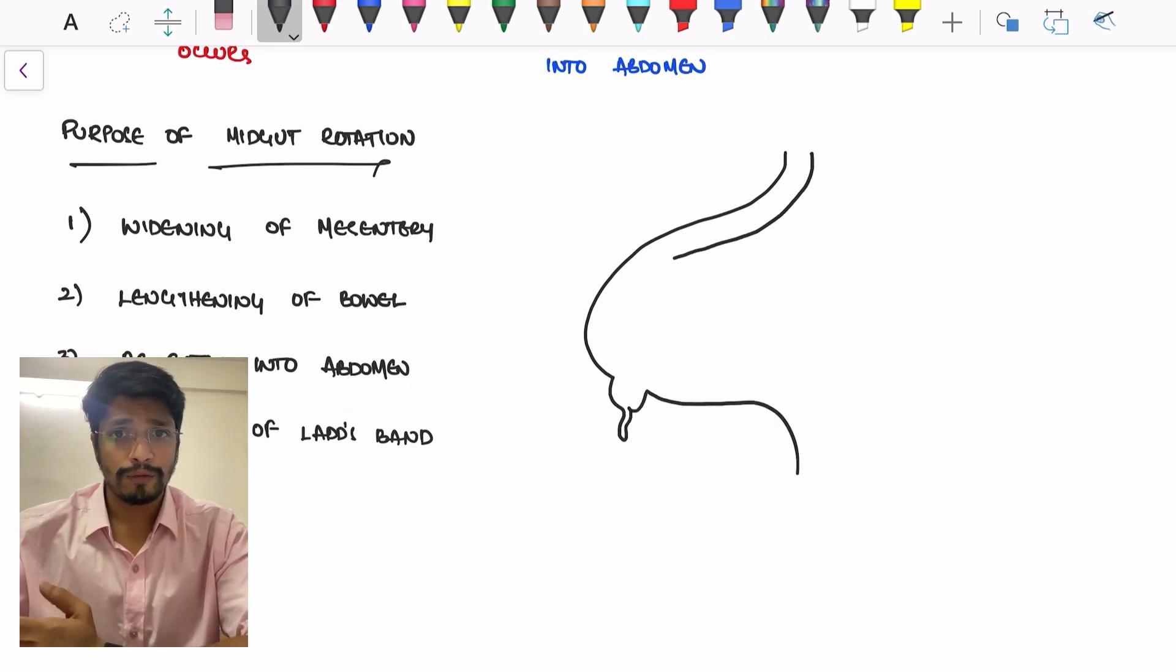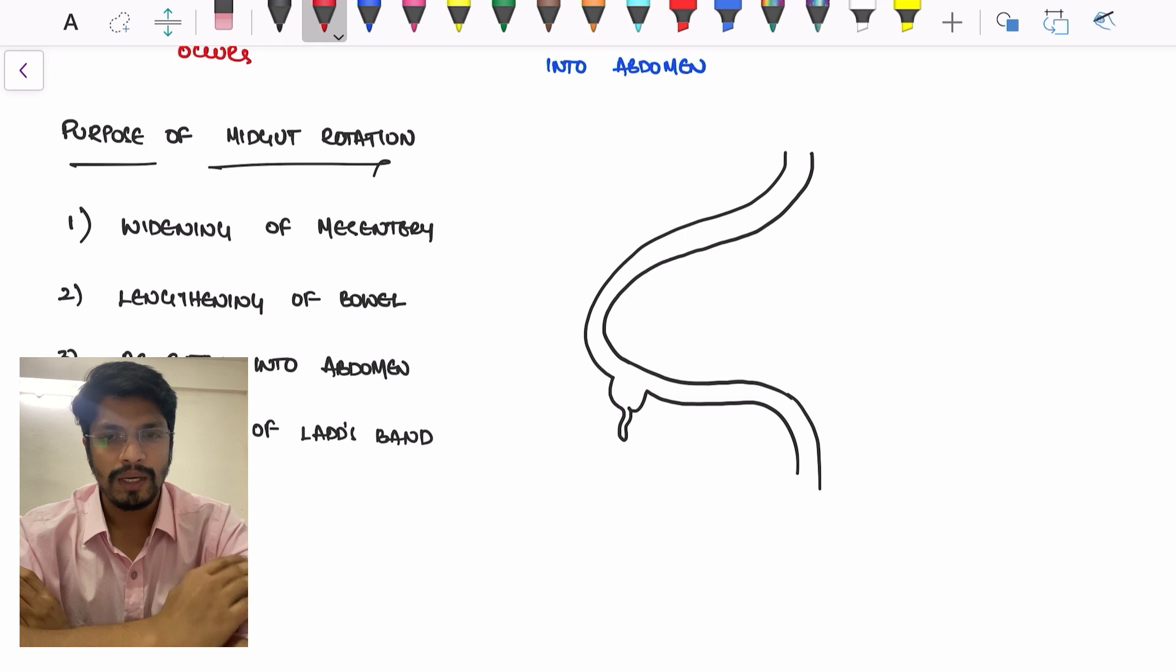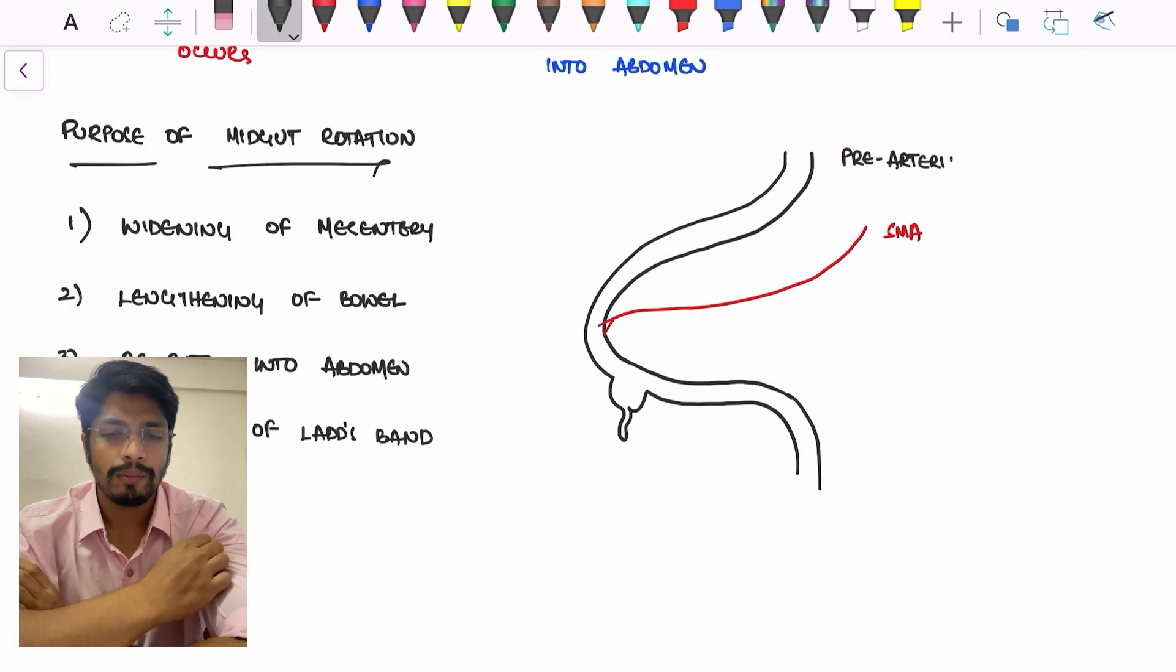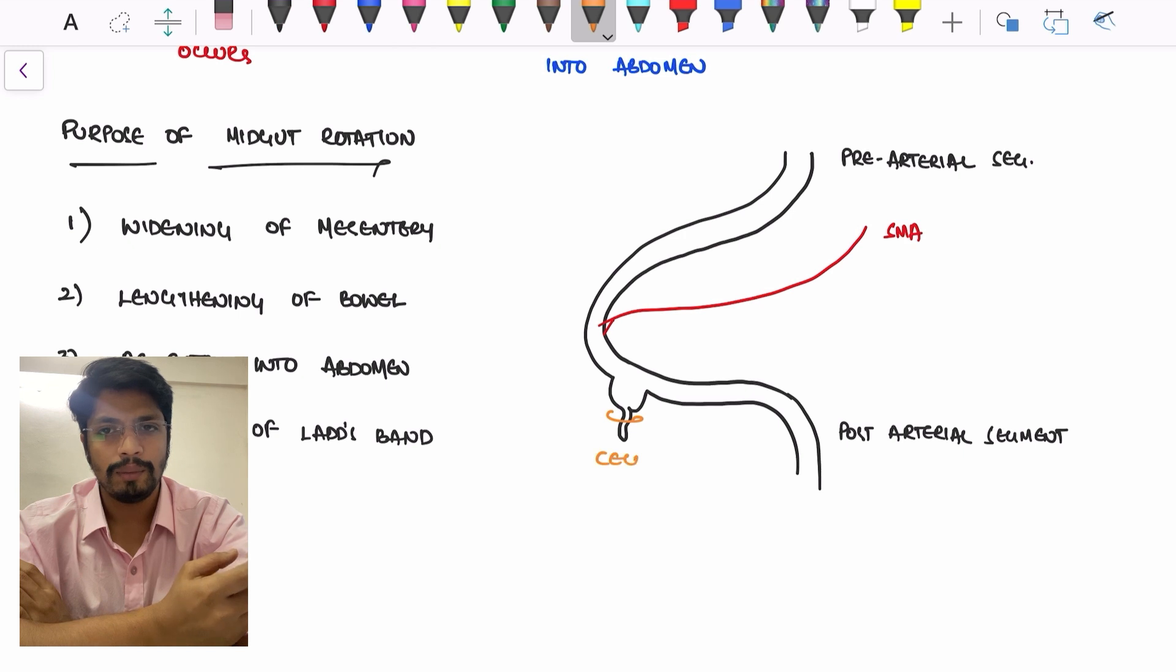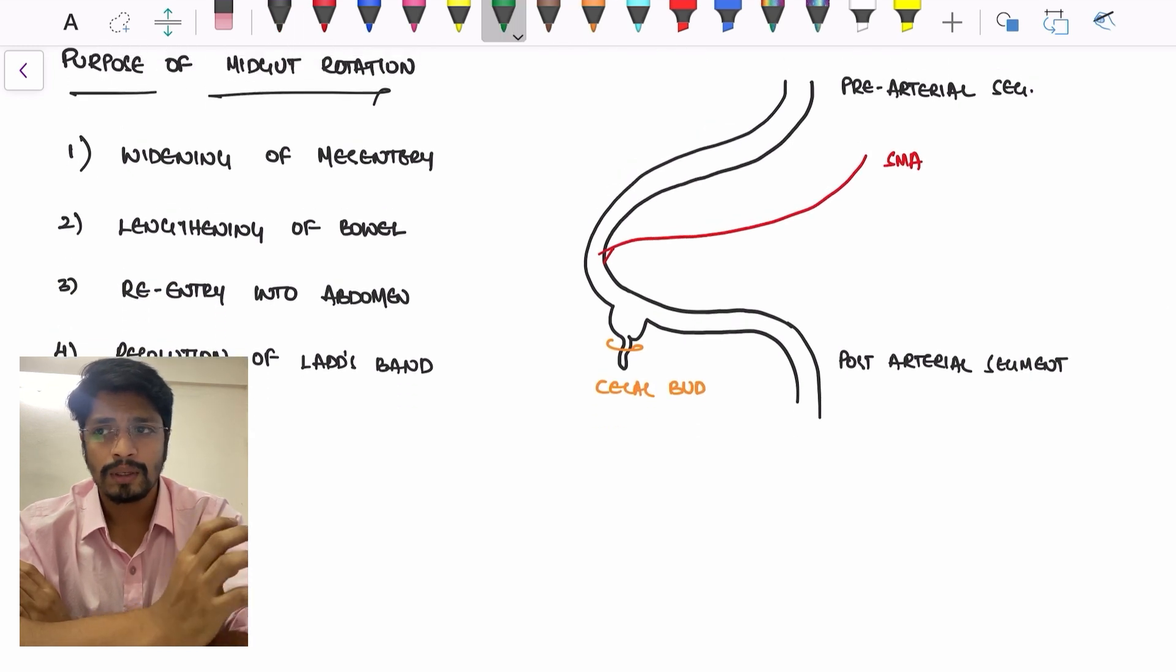Schematic representation of the intestine. The segment which is proximal to the superior mesenteric artery is pre-arterial. It is post-arterial. We can confirm that the pre-arterial will be the small intestine and the post-arterial will be the large intestine. Cecal bud will be present in the post-arterial segment, and this content will emerge out through the umbilical opening.